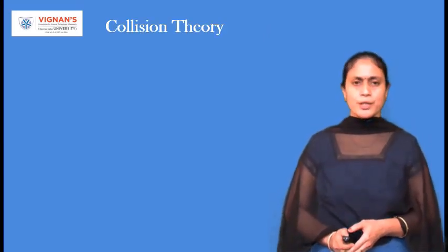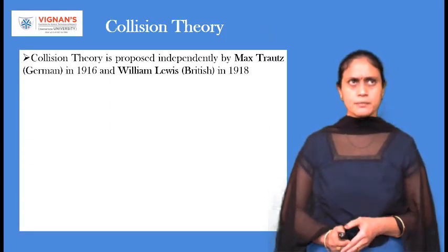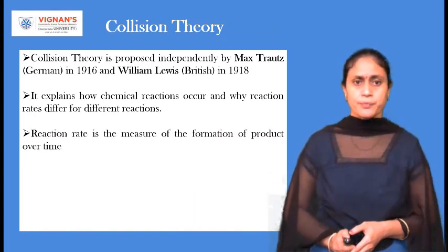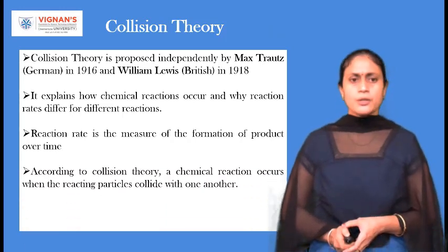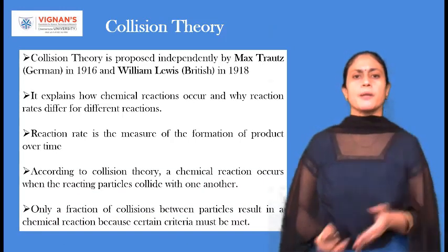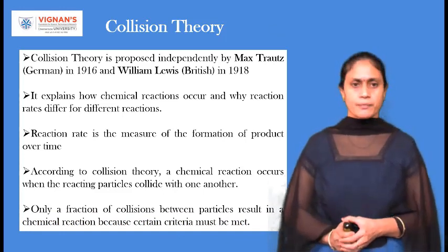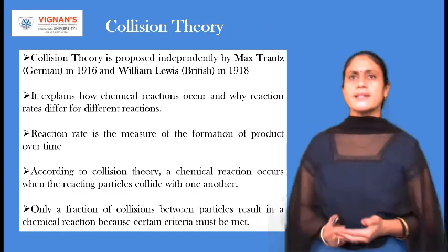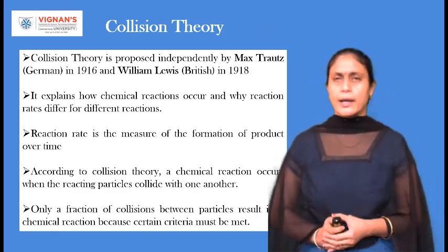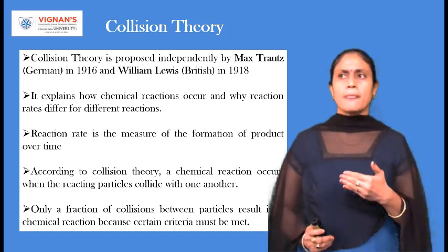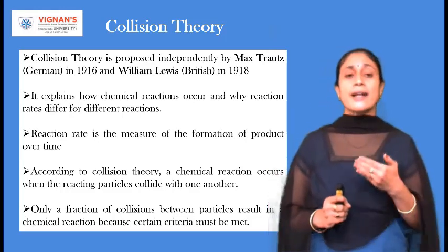The first one is collision theory. You need to know who proposed this theory and what it explains. Collision theory was proposed independently by Trout as well as Lewis. This collision theory explains how chemical reactions occur and why reaction rates differ from one reaction to another.